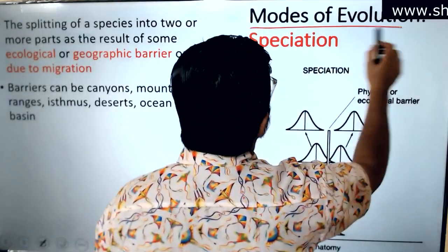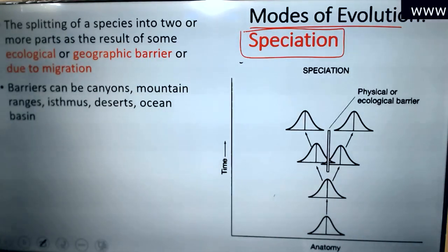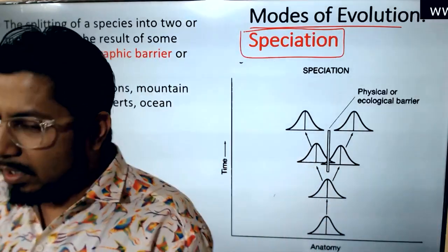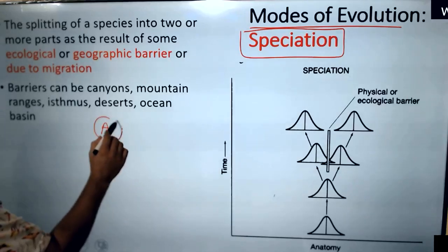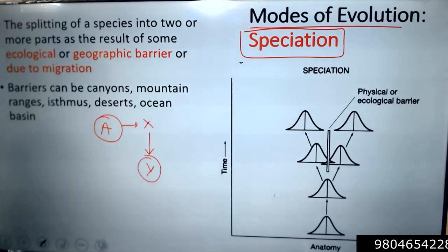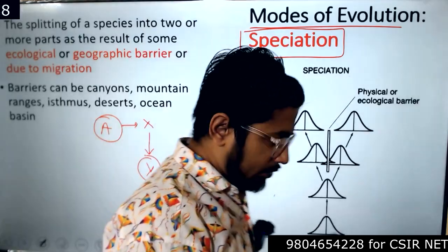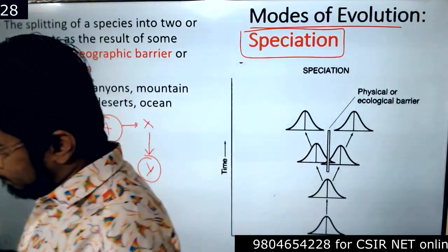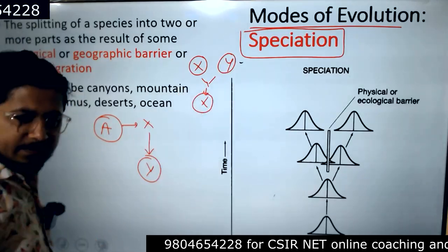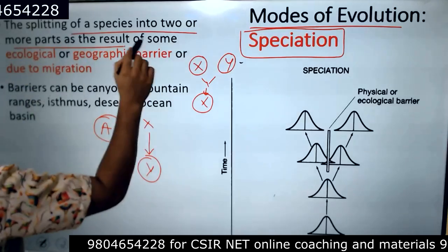Speciation is another mode of evolution. What is speciation? Forming new species — from one existing species, we are forming a new species. We know there is an ancestral species, let's say species X. Now X will become species Y. We call organisms a species because members of a species should be able to reproduce. If two groups are not able to reproduce with each other, we call them different species.